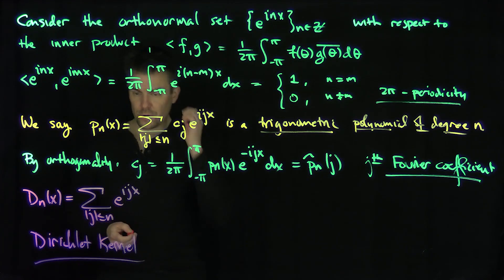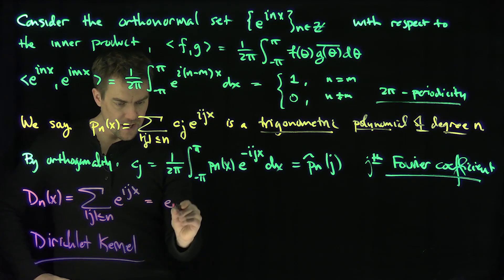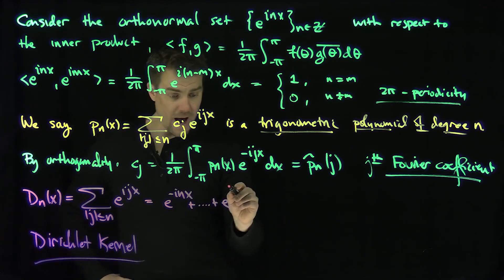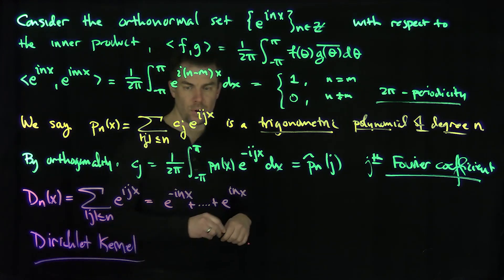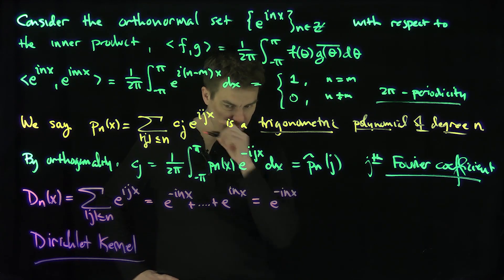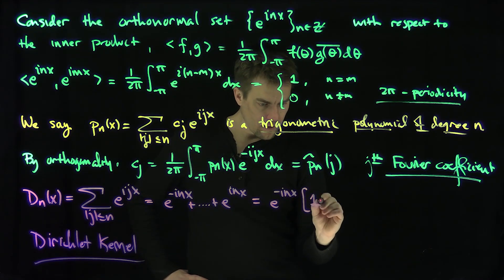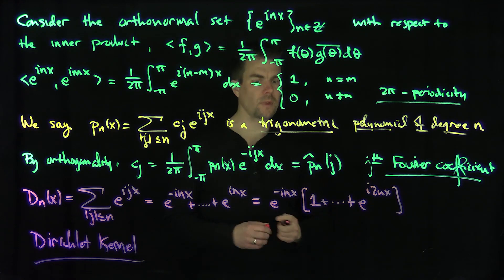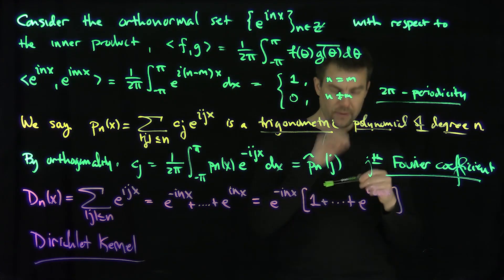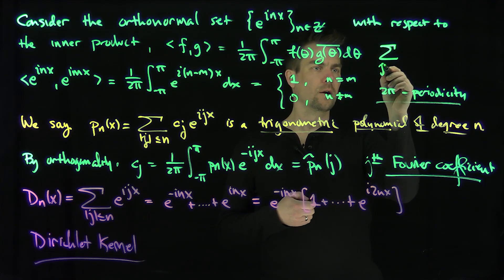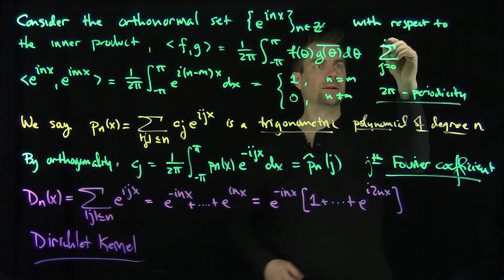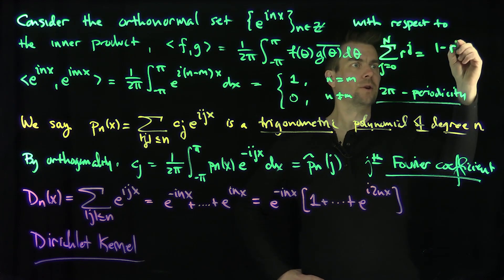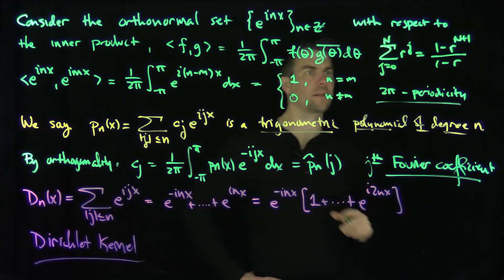Now I'd like to find an explicit formula for this Dirichlet kernel. Writing it out, it goes from e to the minus i n x all the way up to e to the i n x. I pull out a factor of e to the negative i n x, leaving the sum 1 plus e to the i x plus ... up to e to the i 2 n x. Recalling the geometric sum formula: the sum from j equals 0 to N of r to the j equals 1 minus r to the N plus 1 over 1 minus r.